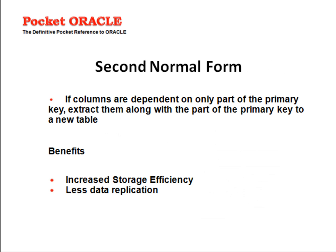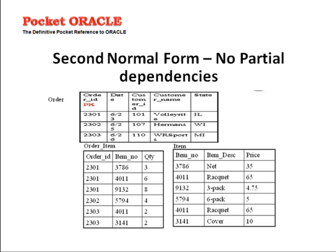The second normal form. In second normal form, if columns are dependent on only part of the primary key, we extract them along with the part of the primary key to a new table. The benefits are increased storage efficiency and less data replication due to less redundancy. Second normal form means no partial dependencies. Here we have further split the orders table into order item and item with the description of the items.